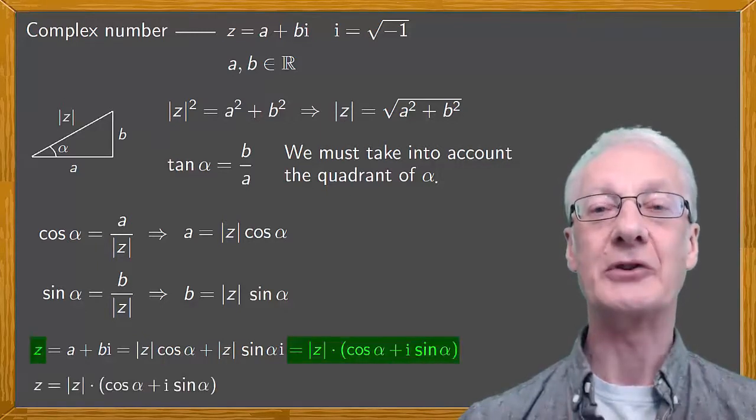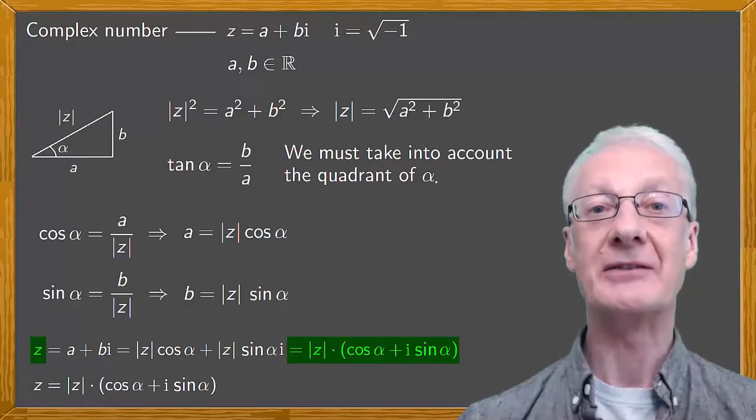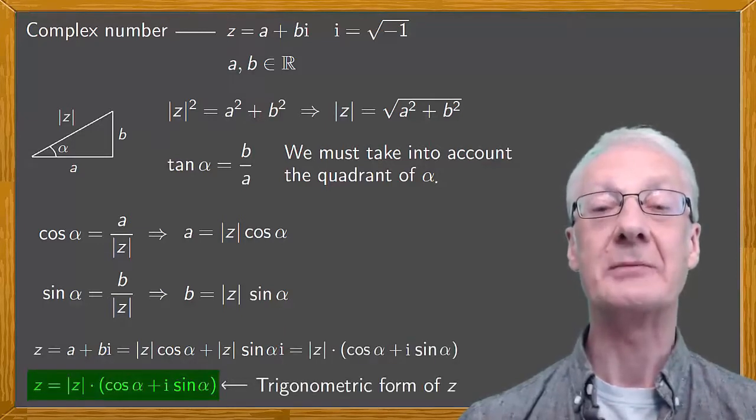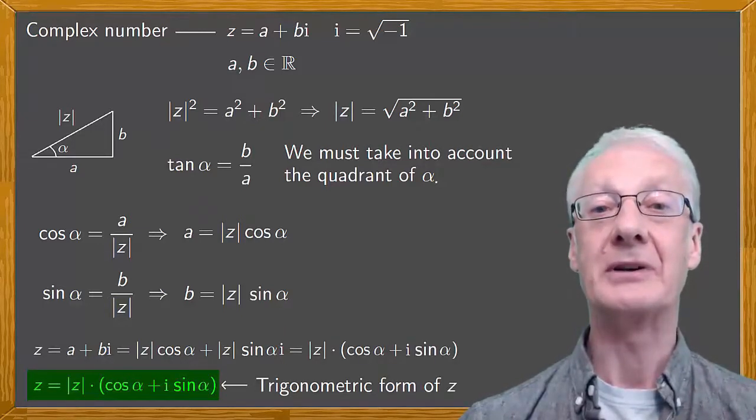So we have that z is equal to the modulus of z times cosine alpha plus i sine alpha. And this is the trigonometric form of the complex number z.